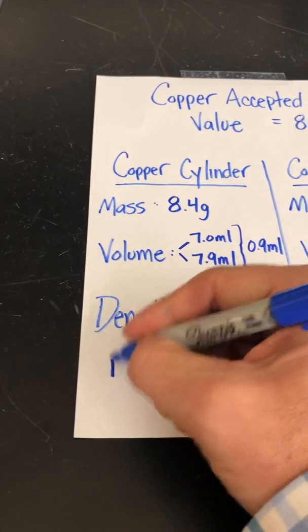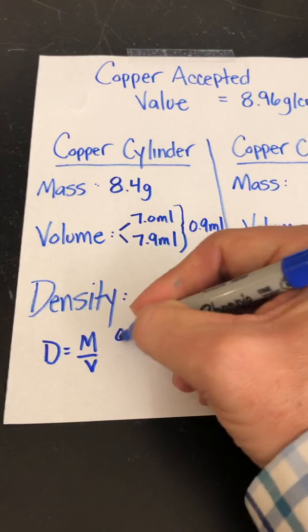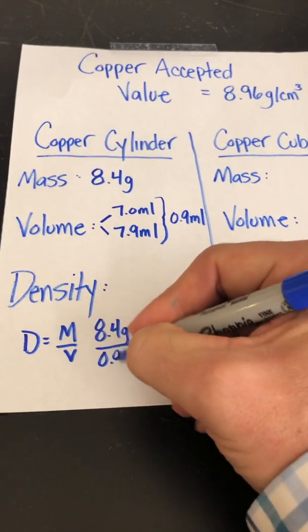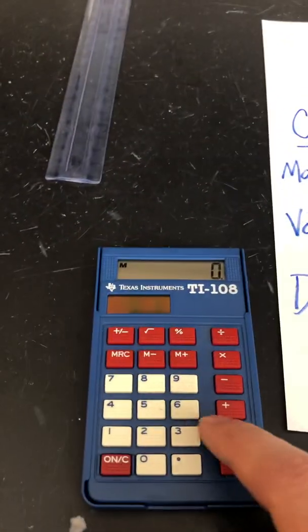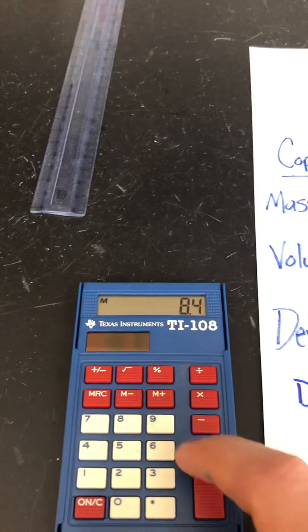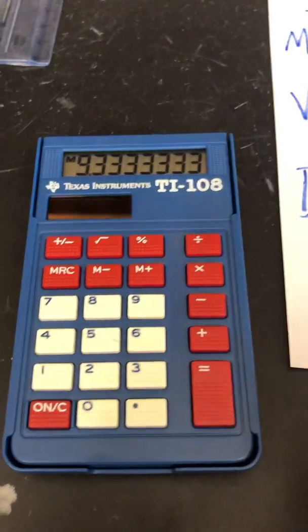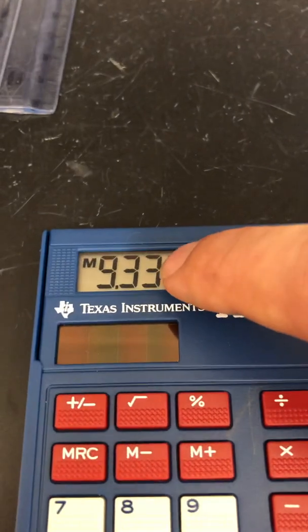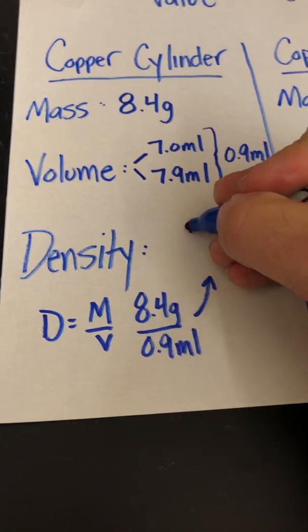Now, in order to get the density, density equals mass over volume. That's going to be 8.4 grams divided by 0.9 milliliters. So we take our calculator, put those values in, 8.4 divided by 0.9, and that turns out to be about 9.3 repeating. Now we're going to round properly. We're going to go to the tenths place. The three in the hundredths place has no impact on the three in the tenths place. So my density here is 9.3.